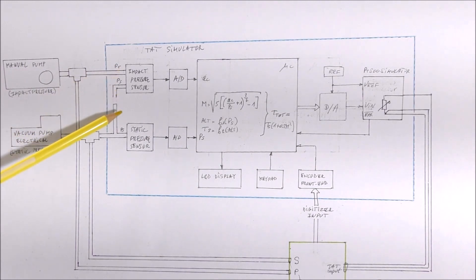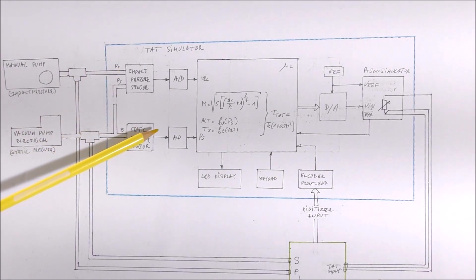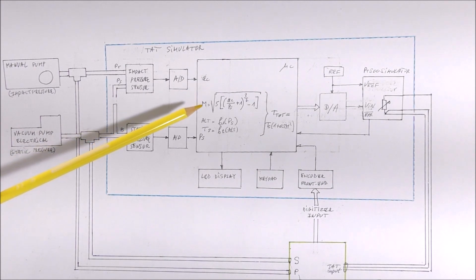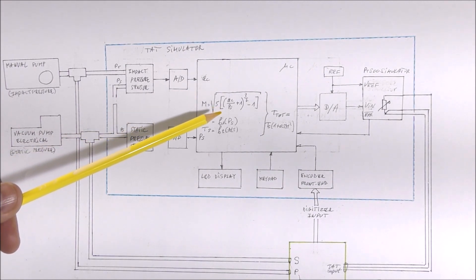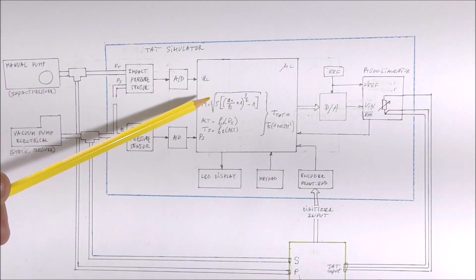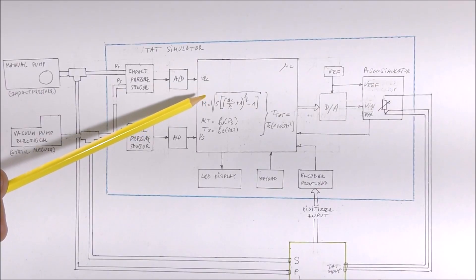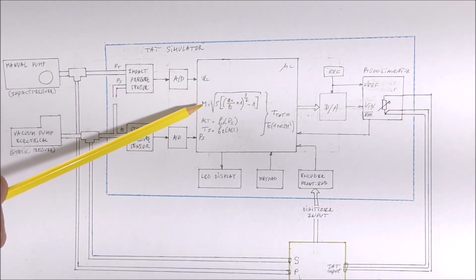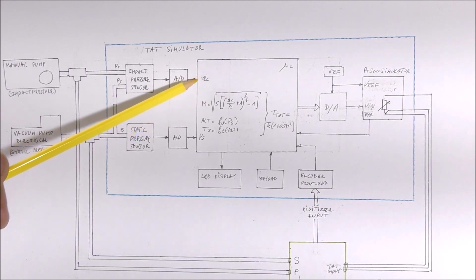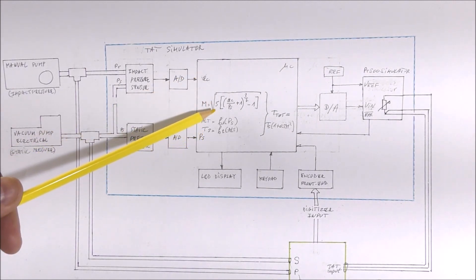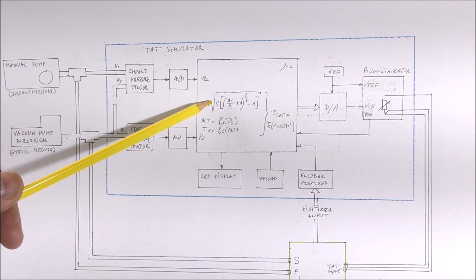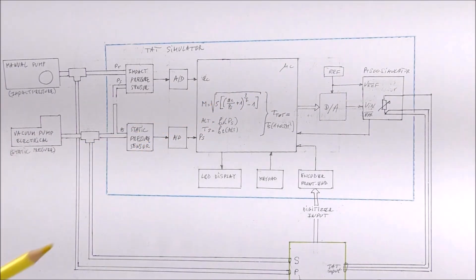The impact pressure and the static pressure will be measured using two AD converters, and there is in the middle a microcontroller. The microcontroller will compute the Mach number. Mach number depends on the ratio between the impact pressure and the static pressure. Here you see this formula, which is valid only for subsonic speed.